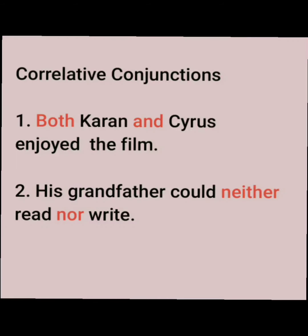Let's see this example: 'Both Karan and Cyrus enjoyed the film.' Here I have used the pair 'both' and 'and'. So we have used two things, but in a pair. Now let's see the second example: 'His grandfather could neither read nor write.' Here, which is the correlative conjunction? Yes — we have the pair 'neither/nor'. His grandfather could neither read nor write. Here also, we have used it in the form of a pair.